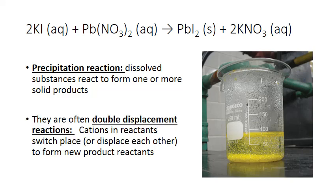Precipitation reactions are often double displacement reactions. This means that the cation of one reactant forms a bond with the anion of the other reactant, and vice versa — the remaining cation and anion switch places to form new compounds. In a precipitation reaction, one of those product compounds has to be a solid.